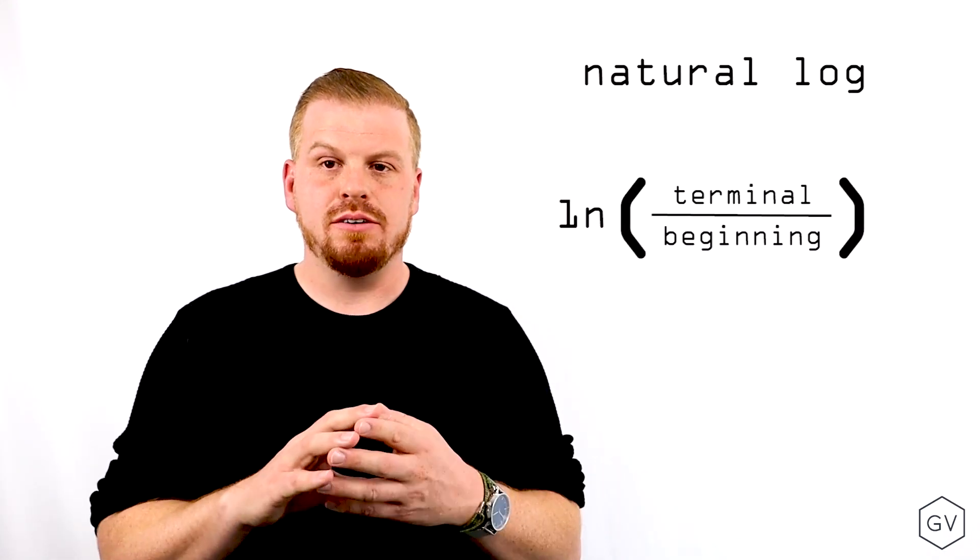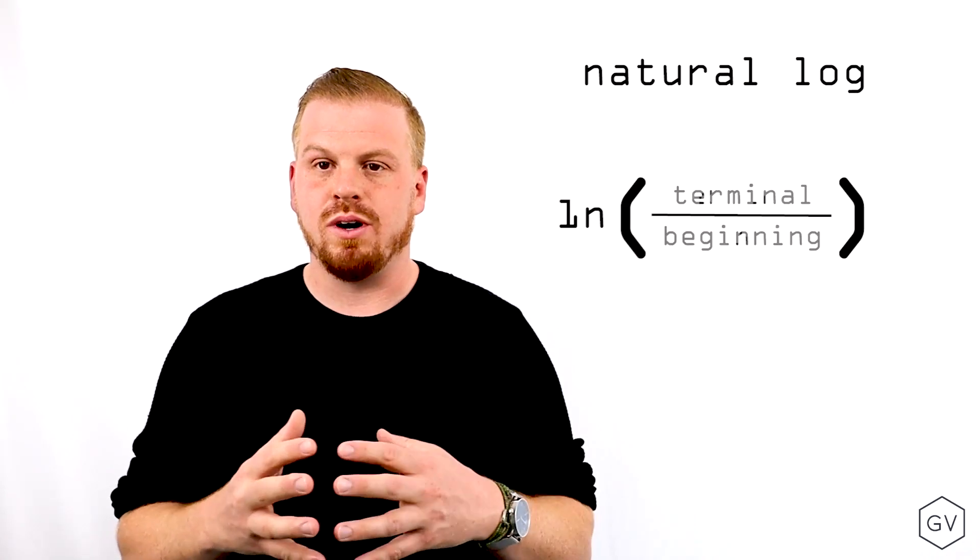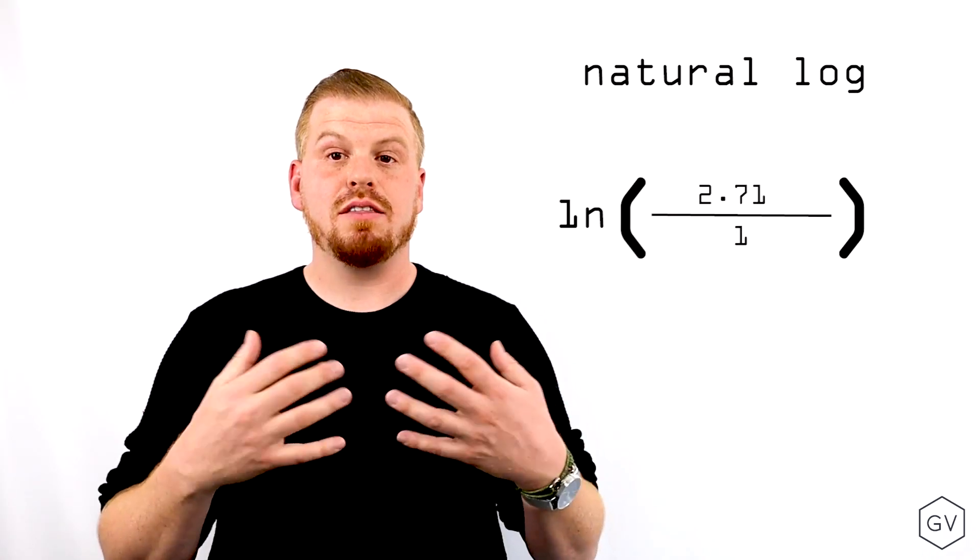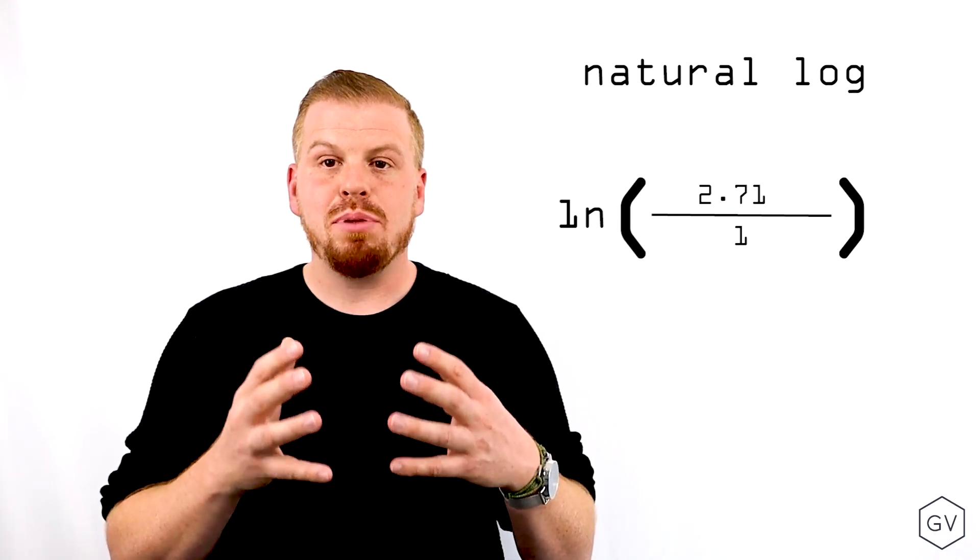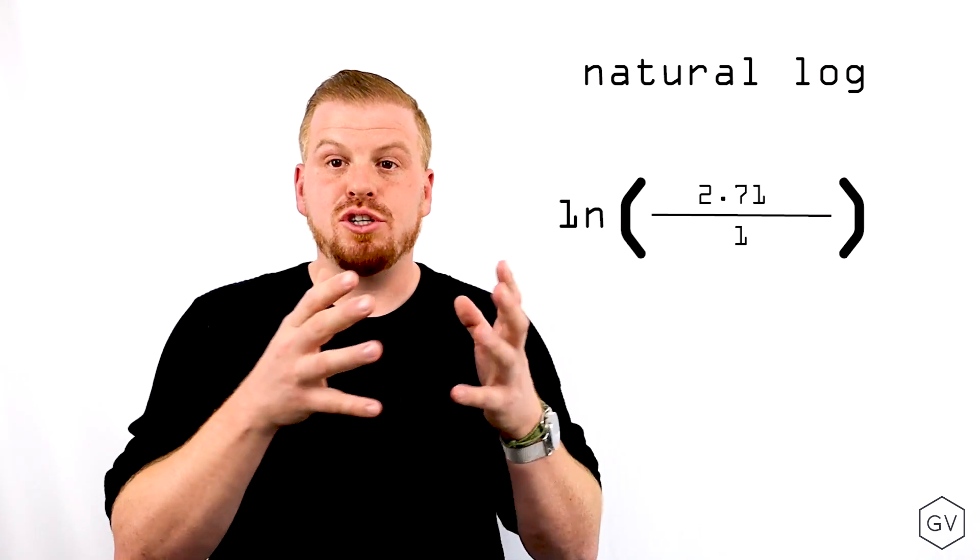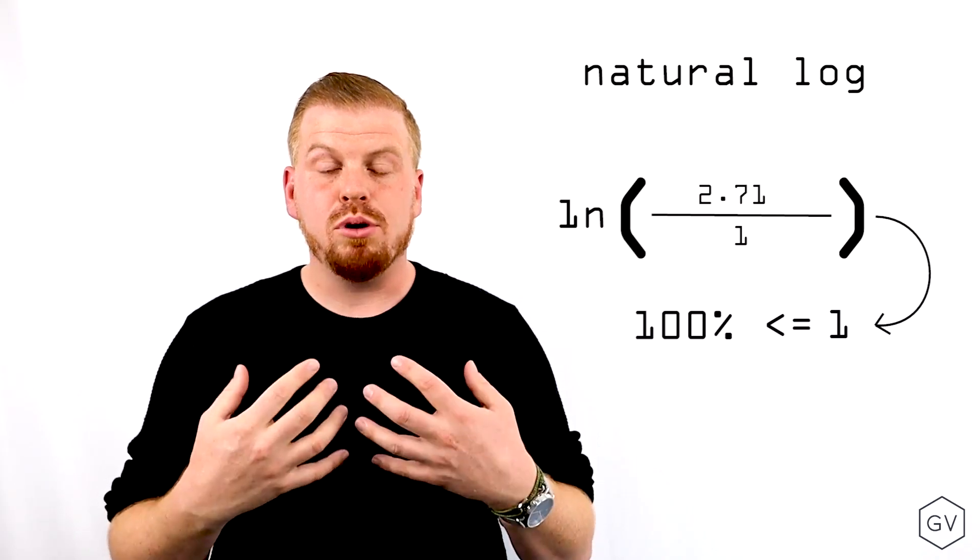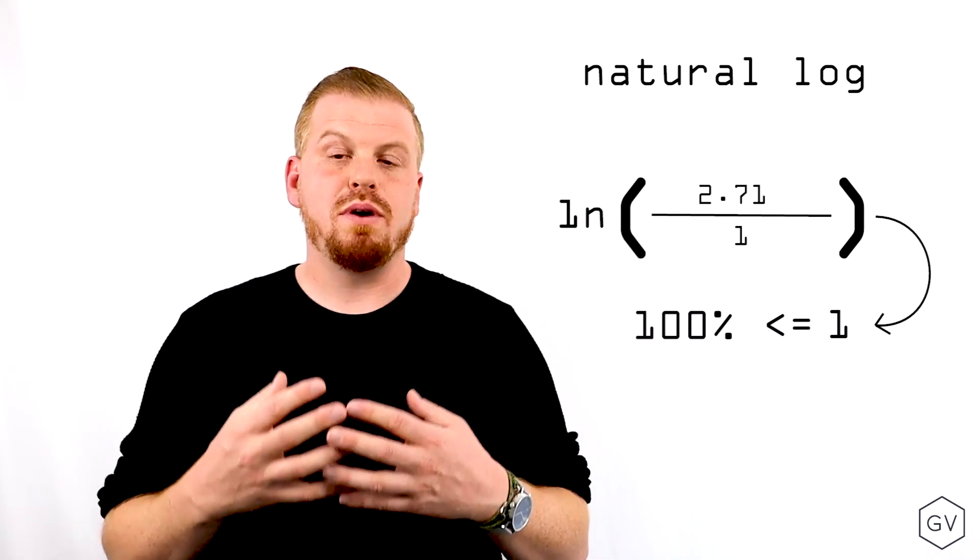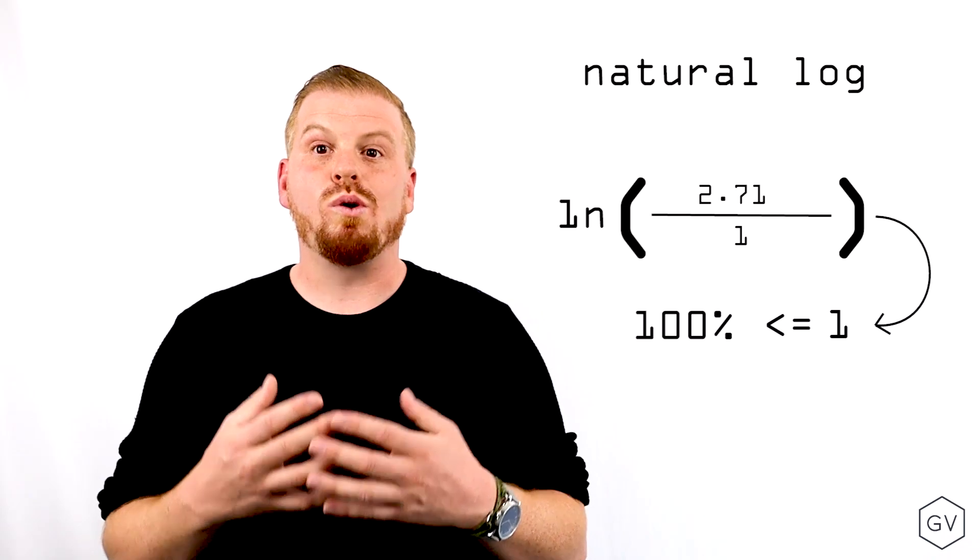Now we can also go the other way. Using the natural log and the terminal value, so in this case, the terminal value is $2.71. And at the beginning of the period, the money was worth $1. If I apply the natural log of $2.71, the output will be the continuously compounded rate. The rate of return was 100% or one.